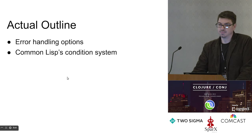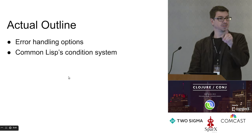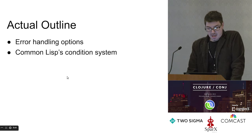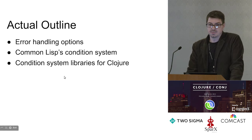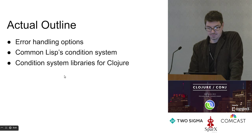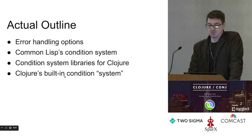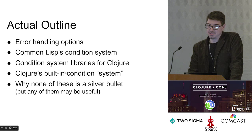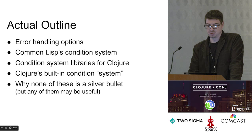My actual outline is: I'm going to talk about some of the options you have when it comes to handling errors. Then we're going to talk about Common Lisp — its condition system provides a lot of those options for you, so you can choose. Then we're going to briefly show some libraries already available for Clojure that implement condition systems. Then we'll talk about a sort of built-in condition system already in Clojure you can use without a library. And then I'm going to talk about why none of them are silver bullets, but they all may be good options in various circumstances.